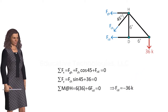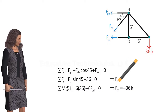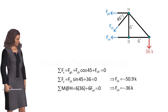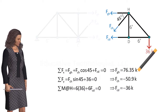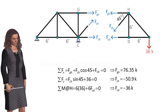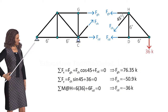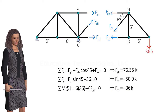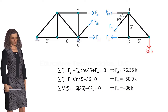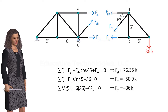If necessary, we can use the other equations to determine the other unknown forces. The second equation gives FCH equals negative 50.9k. Then we can use the first equation to get FGH. Note that for this particular problem, we did not need to know the support reactions in order to determine the force in member CD. But in some other cases, we may have to calculate the support reactions before applying the method of sections.